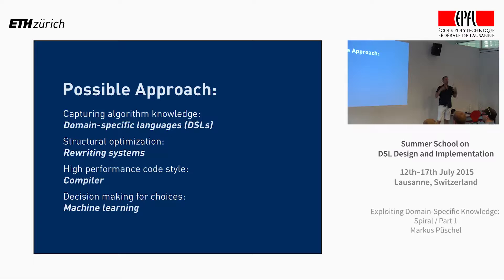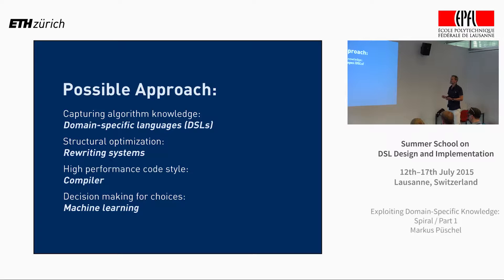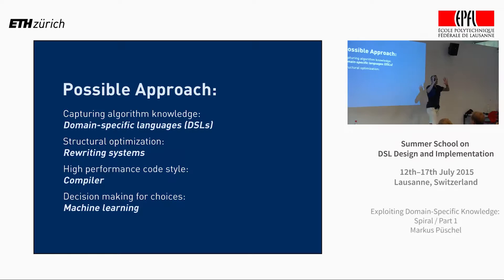So what's the possible approach? This goes along with the vision or high-level idea painted on Monday. We have to somehow get into this high abstraction level, to do things automatically that typically a human would do. In particular, we have to capture algorithm knowledge and get it into the computer. DSLs seem a very natural and good approach for this. Then we have to do the structural optimization — remember what I showed with those two parallel FFTs? You need the domain knowledge.